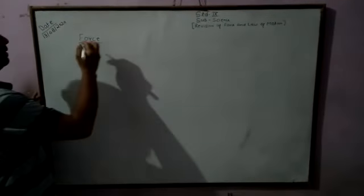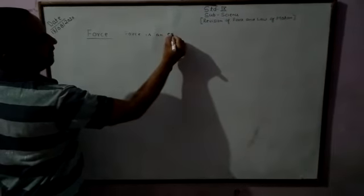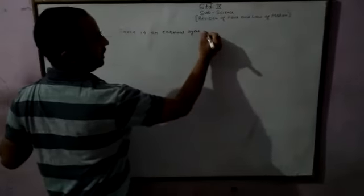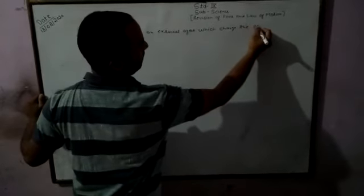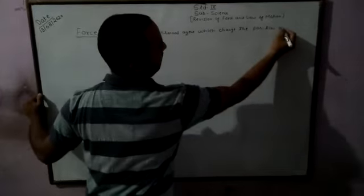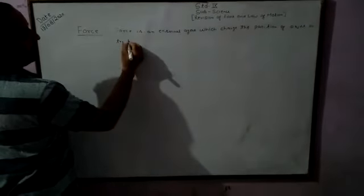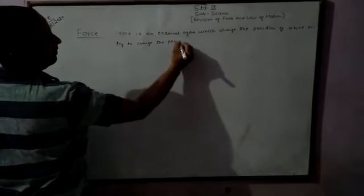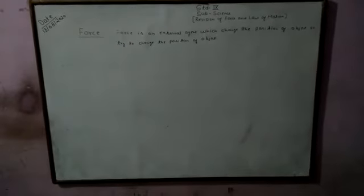What is the definition of force? Force is an external agent which changes the position of an object or tries to change the position of an object. This is the basic definition. Or simply we can say that force is a push or pull on an object.